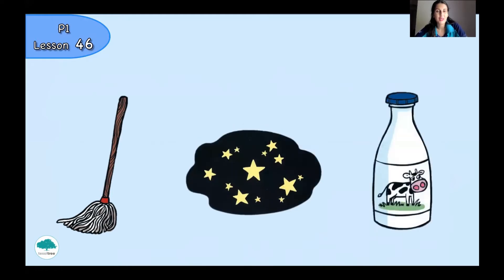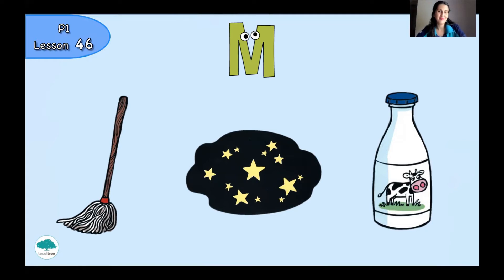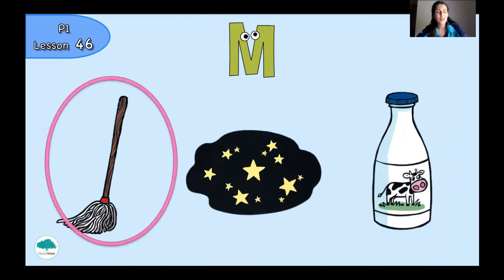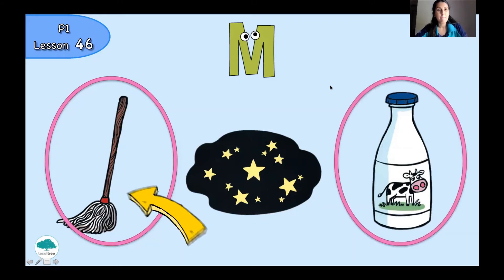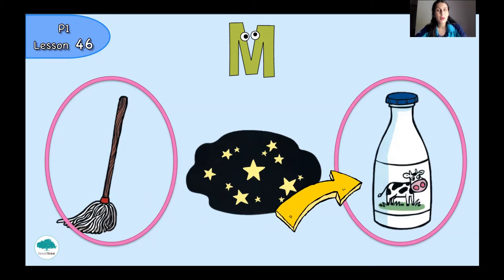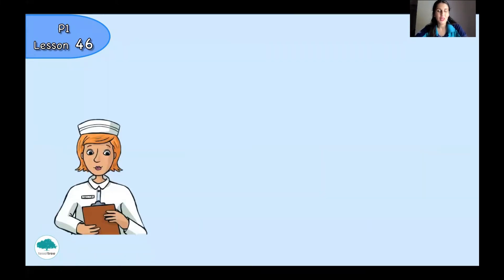Night and milk — we have to circle the picture with the same sound. Can you think and tell me what you want to circle? Mop — yes, very good! We have to circle this picture; the beginning sound is M. And what else? Milk — very good! Mop and milk, good job!